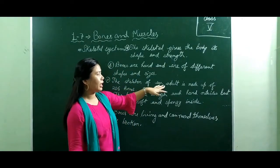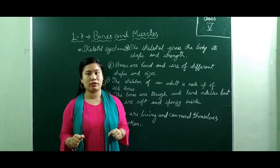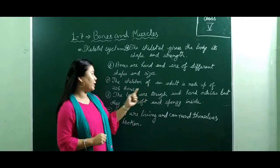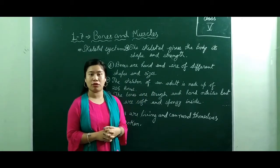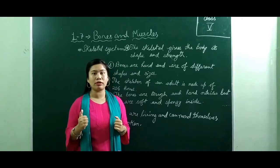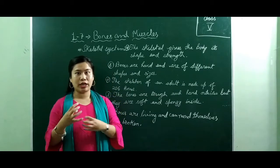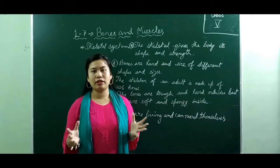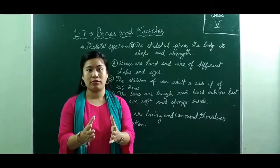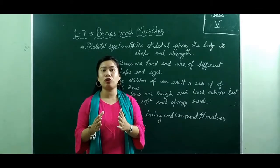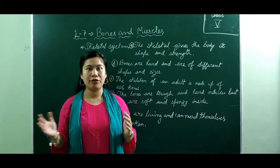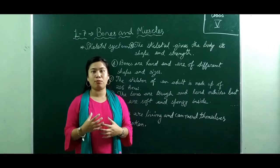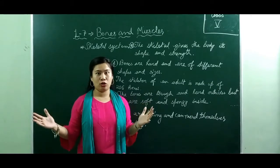The skeleton of an adult is made up of 206 bones. But at birth, you have more bones that gradually grow together as you grow into an adult. As you grow bigger, new cells are added to your bones and they also become larger and longer.